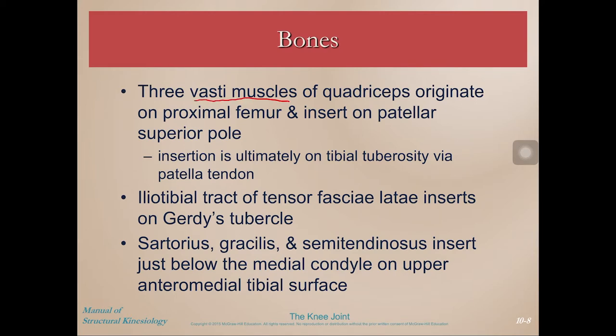The three vasti muscles — vastus lateralis, vastus medialis, and vastus intermedius — all originate on the proximal femur and insert on the patellar superior pole, and ultimately via the tibial tuberosity through the patellar tendon. The IT band of the TFL muscle inserts on Gerdy's tubercle.